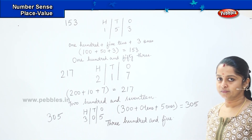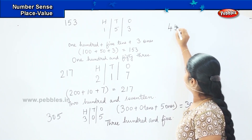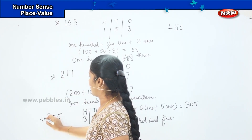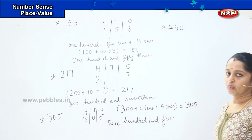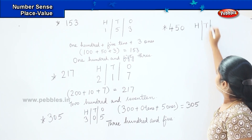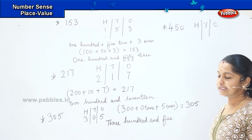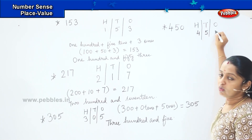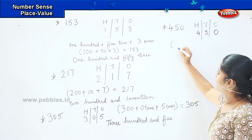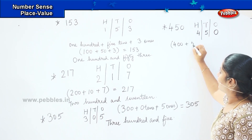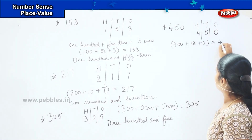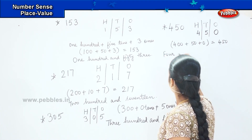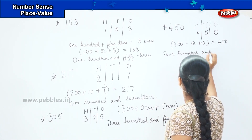Shall we do some more? Now tell me how will you write four hundred and fifty? You split it in three groups: H, T, O — four in H, five in T, and zero in O. You write as four hundred plus fifty plus zero, which equals four fifty. The number name is four hundred and fifty.